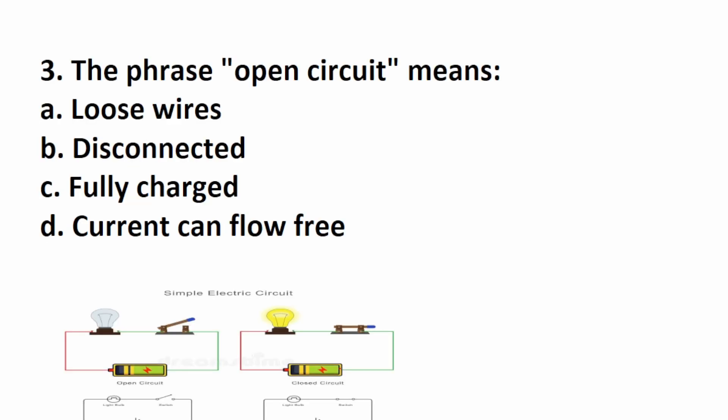Number three says the phrase open circuit means. Let's go through these answer choices and see if we can figure this out. It definitely does not mean fully charged. Down here, I have a chart of an open circuit and a closed circuit. As you can see in this closed circuit, electricity can flow through this switch to the light and back to the battery.